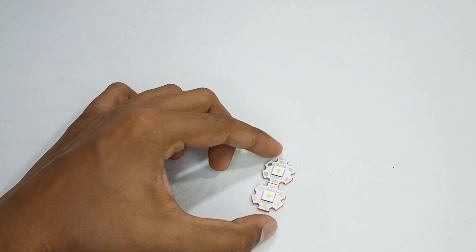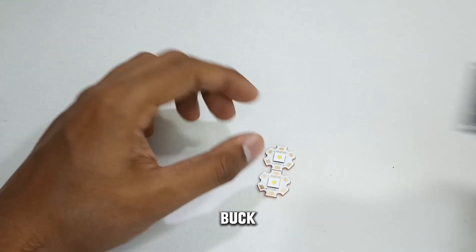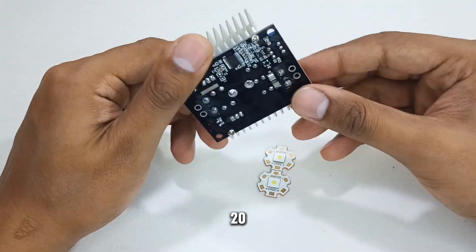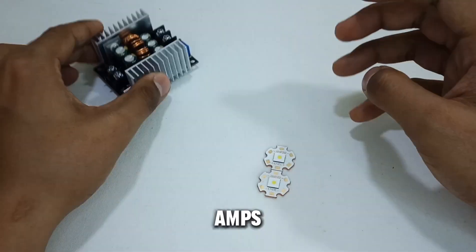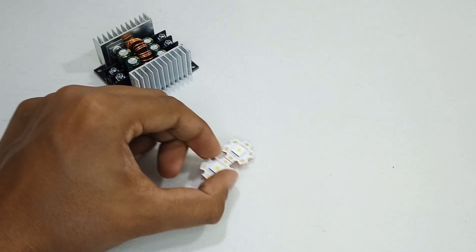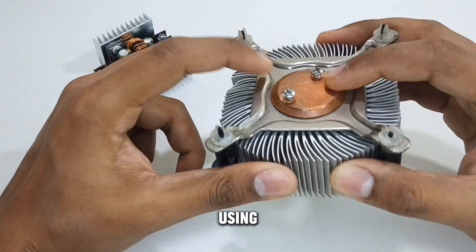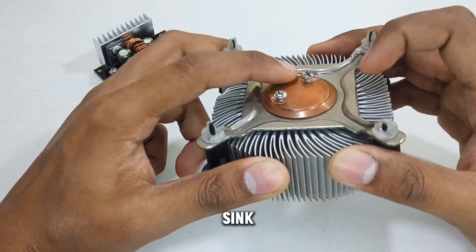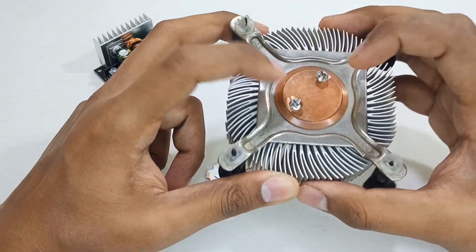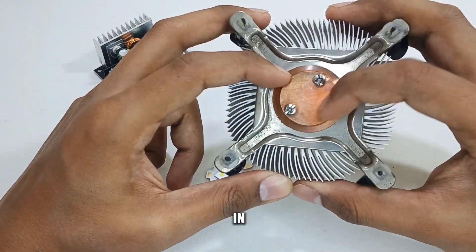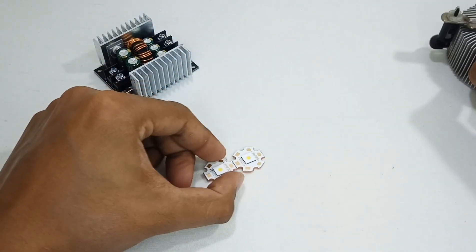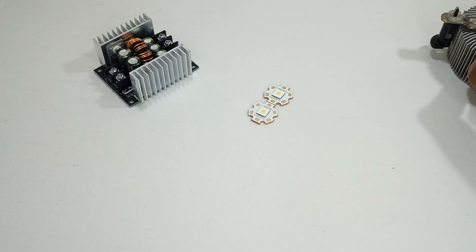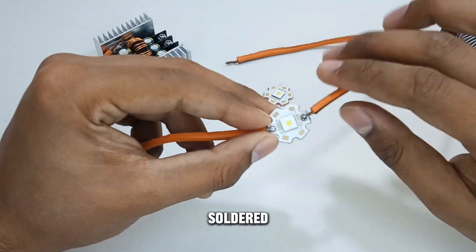First of all, we need a buck converter. This is the 20 amps buck converter that can handle 20 amps. On the other hand, we need a big heatsink. I am using this copper CPU heatsink. I already drilled two holes to fit the LED in place and already soldered the two wires.